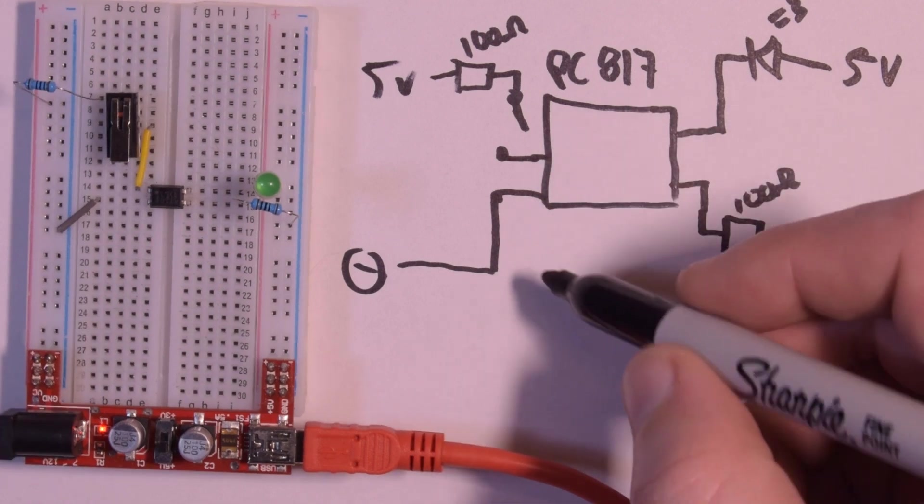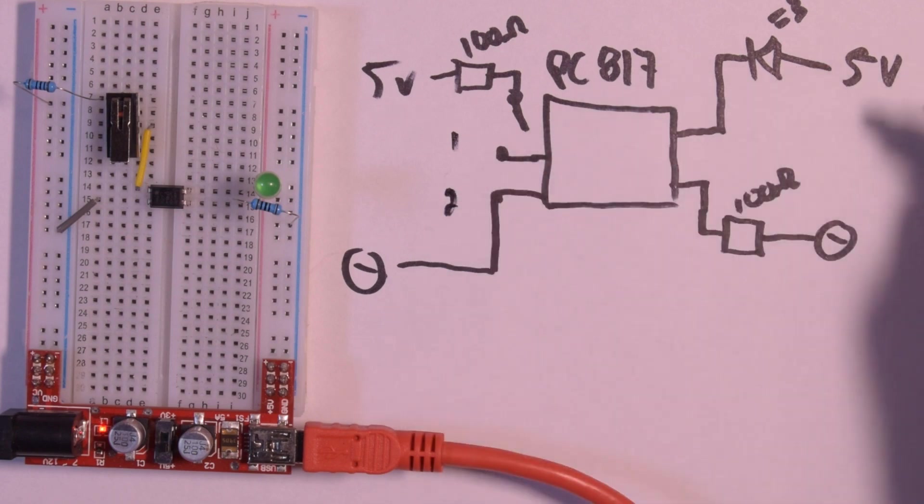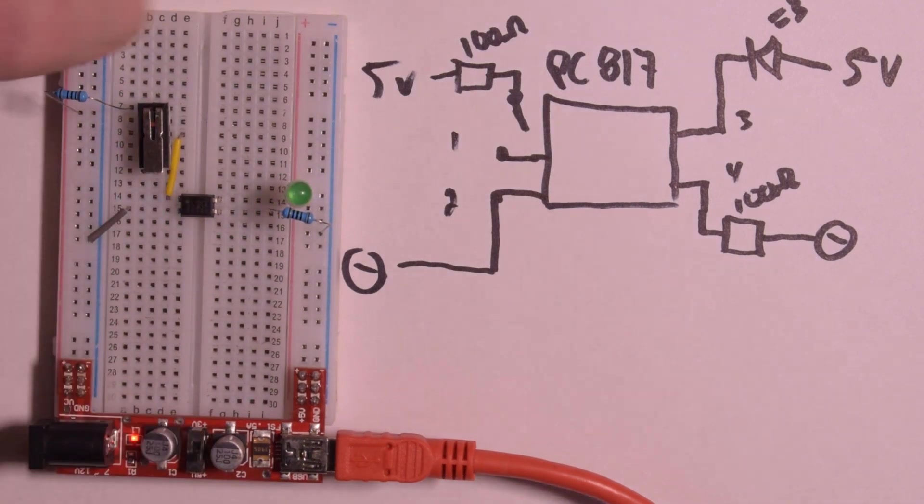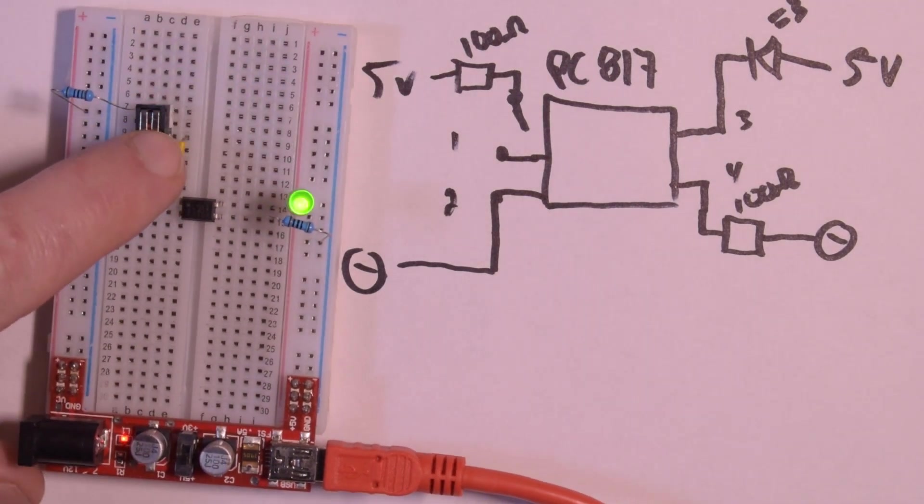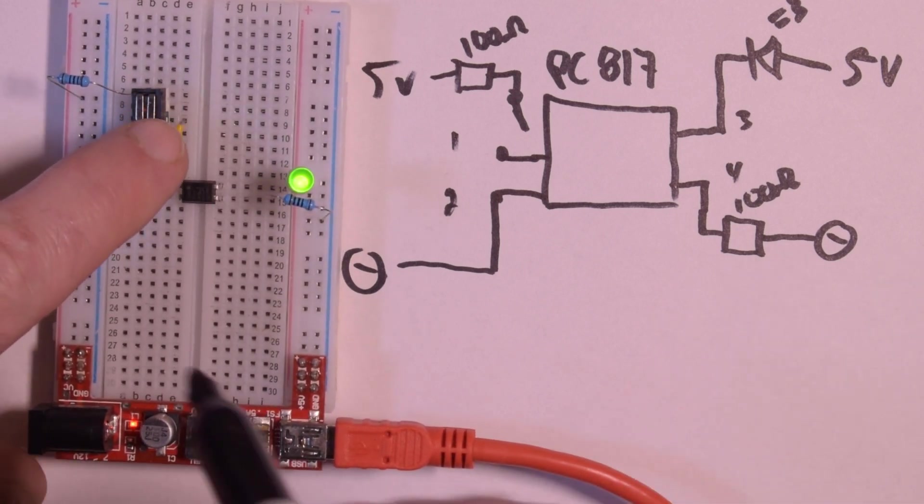And our switch and transistor on this side has been replaced by the PC817. So this would actually be pins, that's pin 1, that's pin 2, that's pin 3, and that's pin 4. And let's see what happens now when we hit our switch.